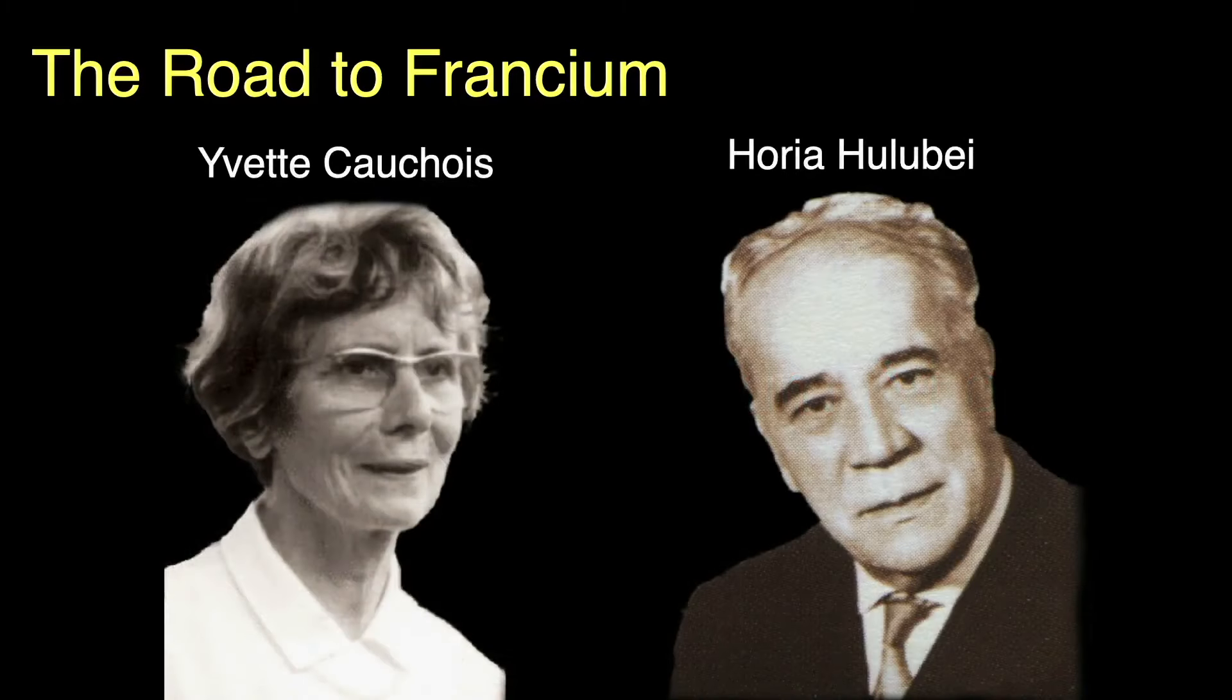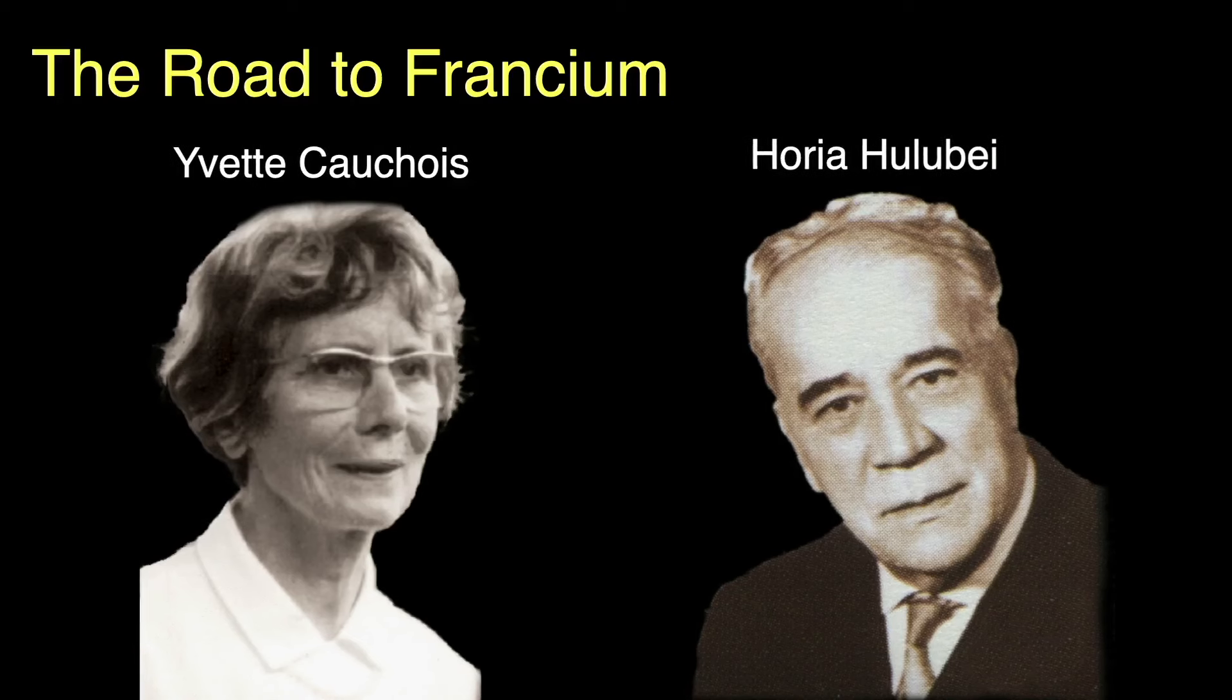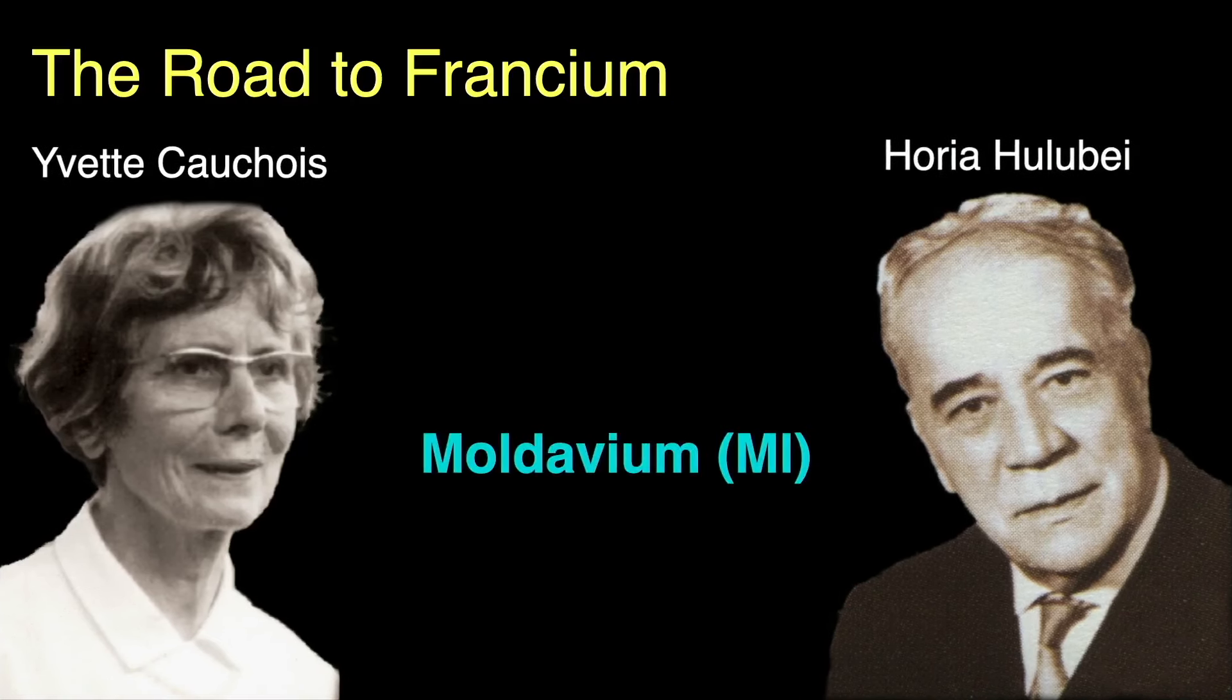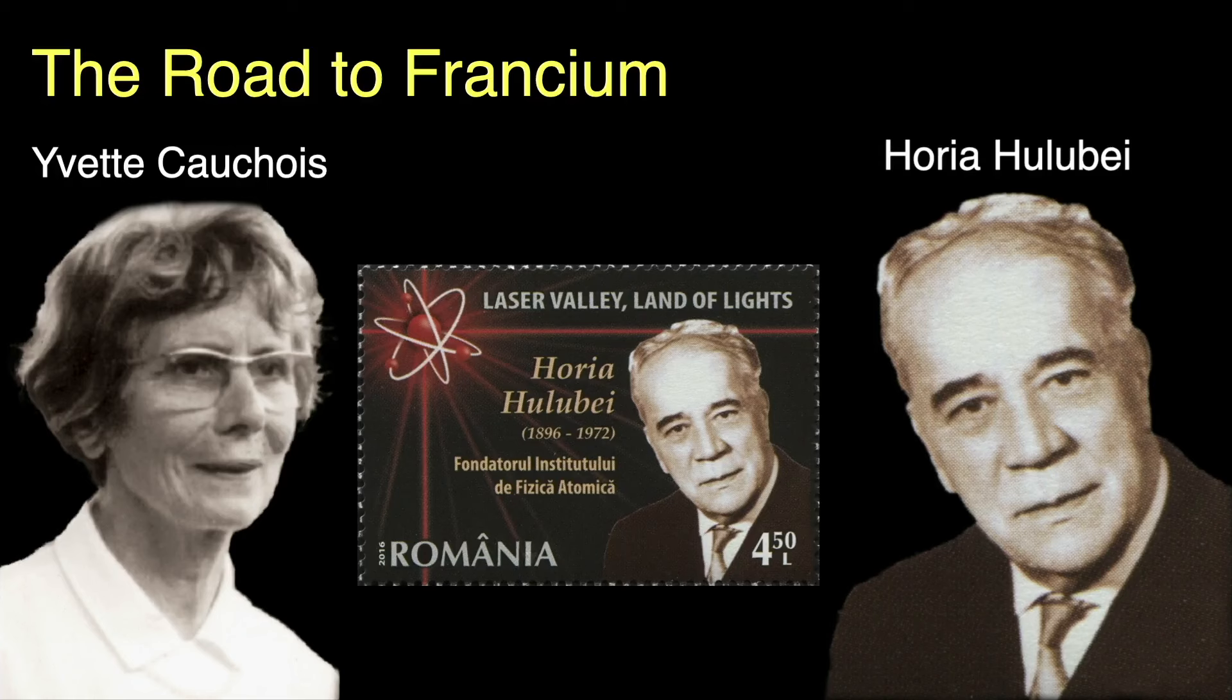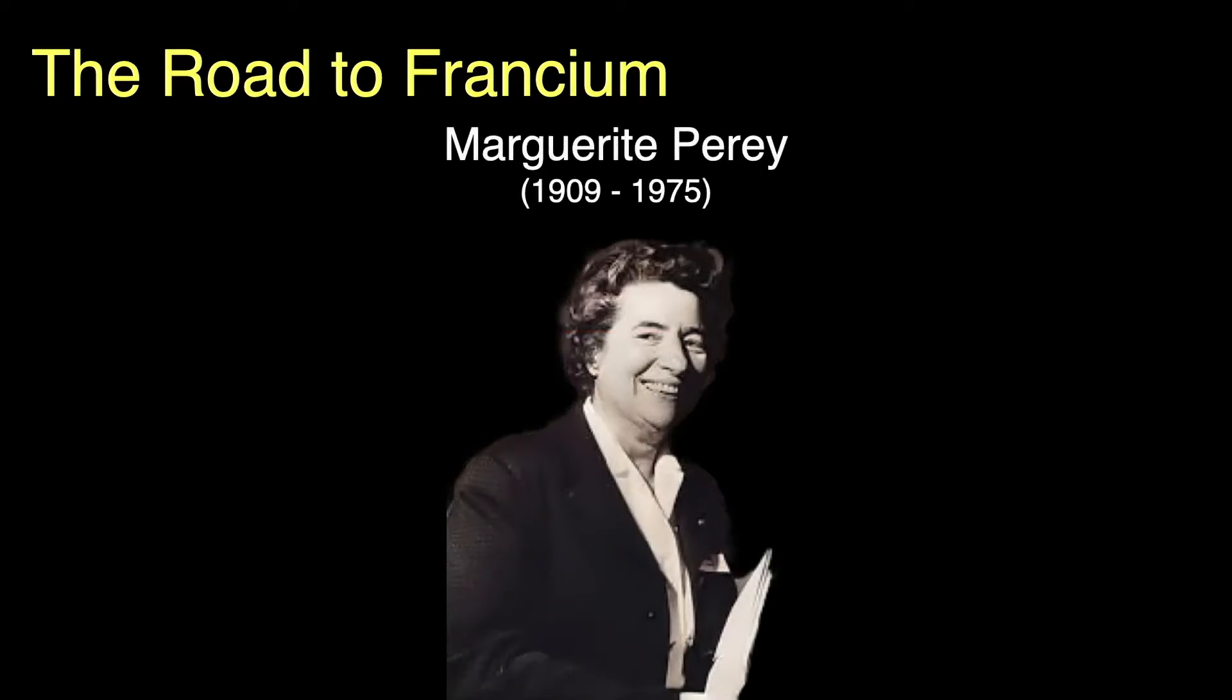The next contenders are our old friends from astatine, Yvette Kaushwa and Horya Hulubay, who claimed to have discovered the presence of element 87 using X-ray spectroscopy. They wanted to call the new element Moldavium, chemical symbol ML, after Moldavia, where Hulubay was born. Hulubay went on to become the founder and first director of the Institute of Atomic Physics in Romania, even earning a postage stamp in 2016. There was much argument over their work, and eventually, the discovery was awarded to the hero of our story.